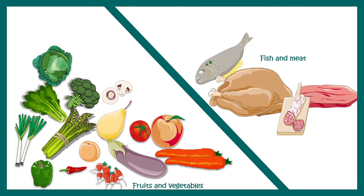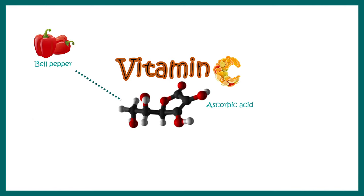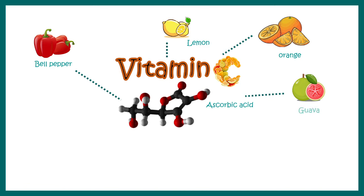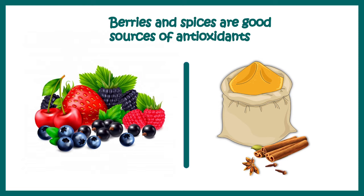Having a balanced diet combining several foods is really important, especially foods enriched in vitamin A such as carrots, bell pepper, mutton liver, and sweet potatoes. Foods enriched in vitamin E include several grains and olives. Vitamin C is a potent antioxidant and key sources include bell pepper, lemon, orange, guava, Brussels sprout, cauliflower, and kiwi. We can also get antioxidants from berries and several spices like turmeric and cinnamon.